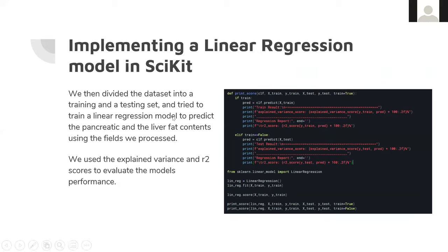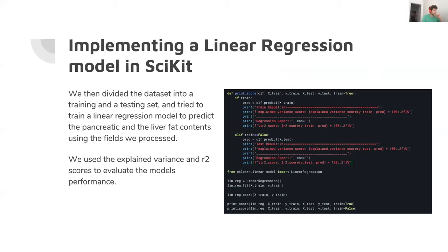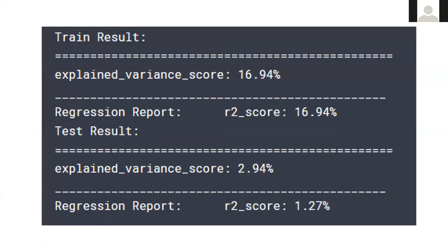Next, based on these findings, we implemented a linear regression model in scikit-learn. We divided the dataset into training and test sets and tried to fit a linear regression model, using standard metrics to evaluate model performance. Unfortunately, this was the first time we'd used this data so the results were not as good as we expected — the scores were pretty low.